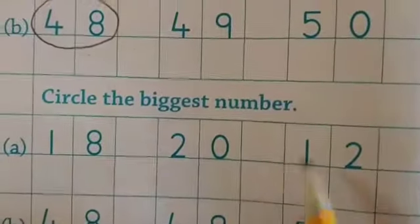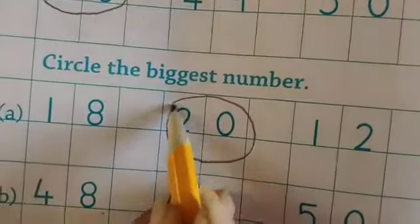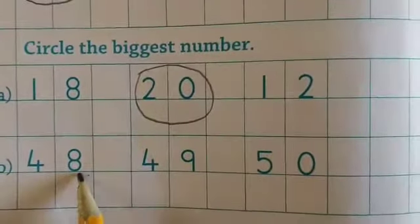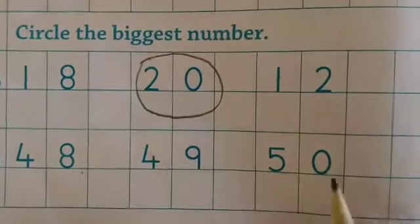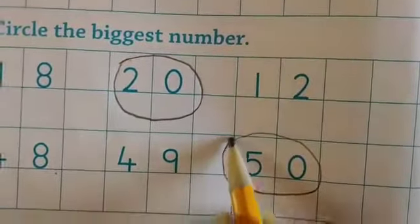18, 20, 12 - 20 is the biggest number. 48, 49, 50 - so 50 is the biggest number.